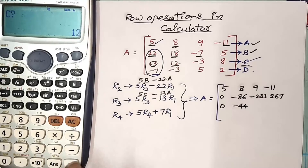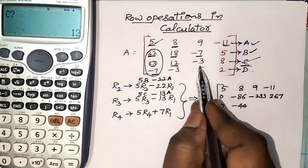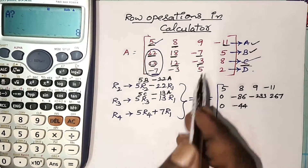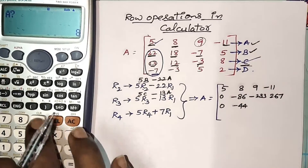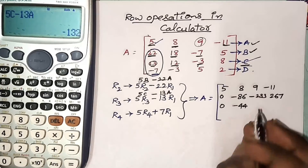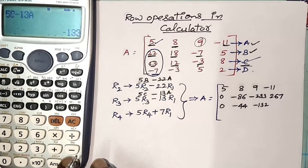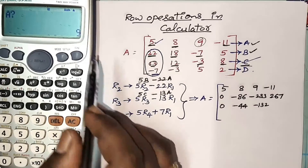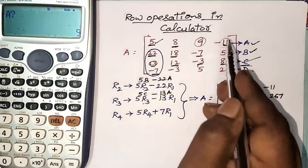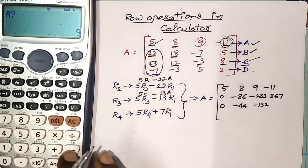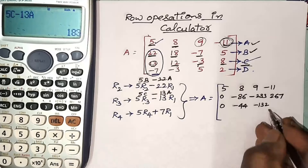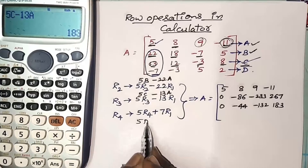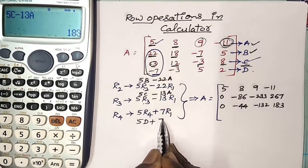Next, C value is minus 3 and A value is 9 — I got minus 132. For the last value, C value is 8 and the last value in the first row is minus 11 — I got 183. Next, the last operation is 5D plus 7A.